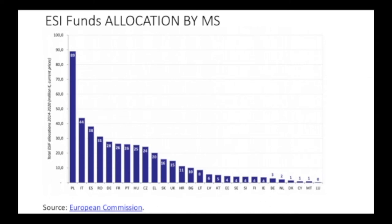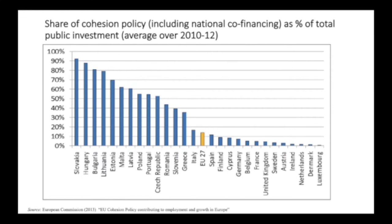Looking at ESI Funds allocation by member state, Poland is the main beneficiary, followed by Italy, Spain, Romania, Germany — because of Eastern Germany — France, and Portugal. The allocation is related to level of development but also very much by the size of the country. Poland is particularly interested in demonstrating effective use of the funds given its dependency on them. For some countries, the share of cohesion policy in total national investment is very large — including national co-financing — demonstrating how much a country's investment is based on EU finance, which is of very high political importance.